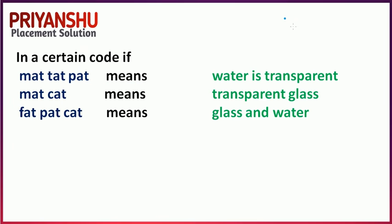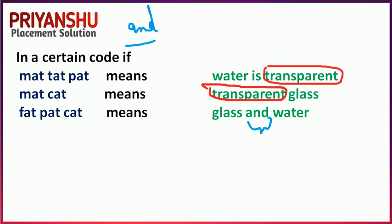Next question is a coding-decoding problem. You have three coded sentences and need to find the code for 'and'. We check: 'water is transparent' and 'mat is transparent glass' — 'transparent' appears in both sentences, and 'mat' is the common code word. So the code for 'transparent' is 'mat'.